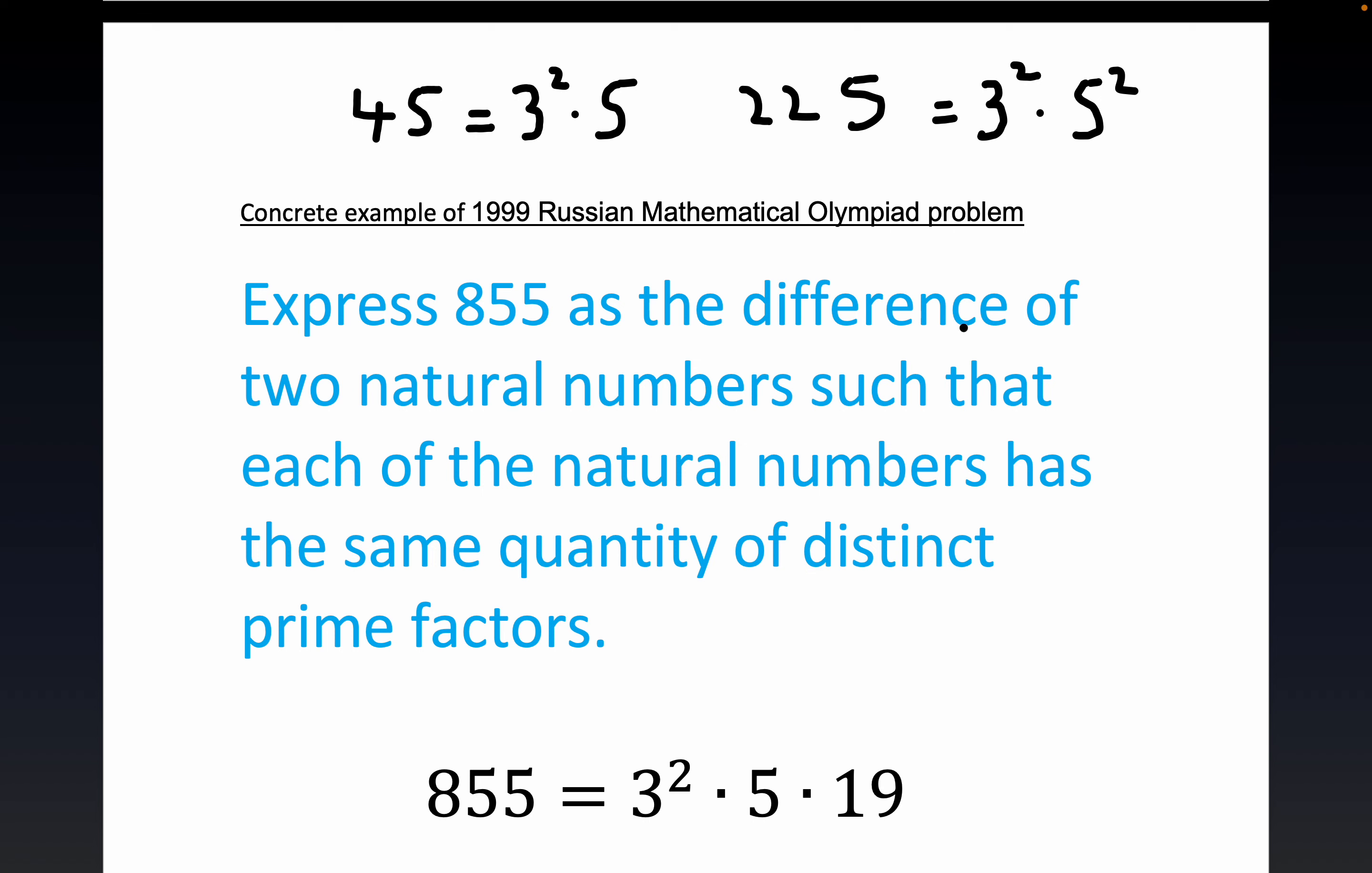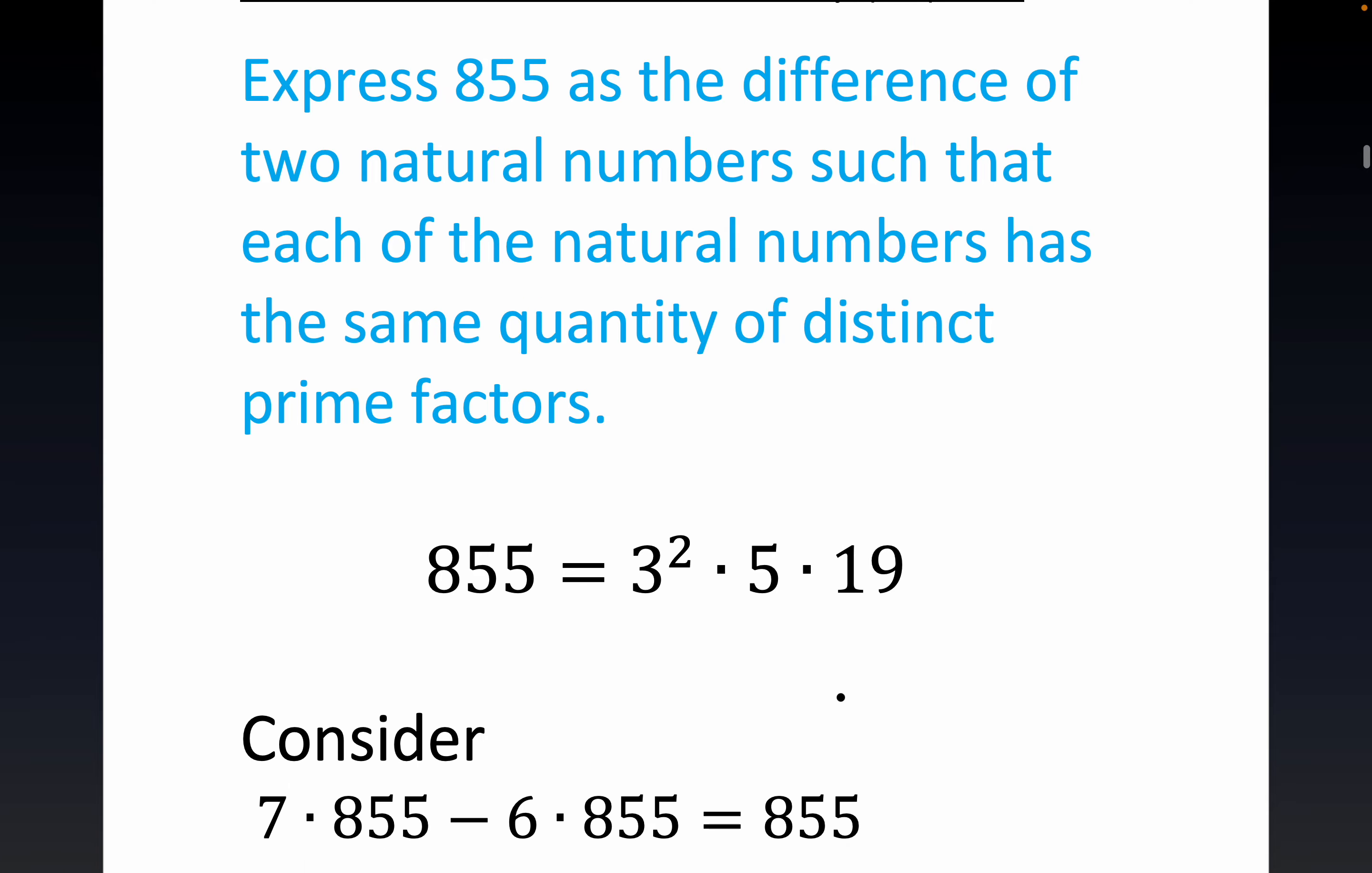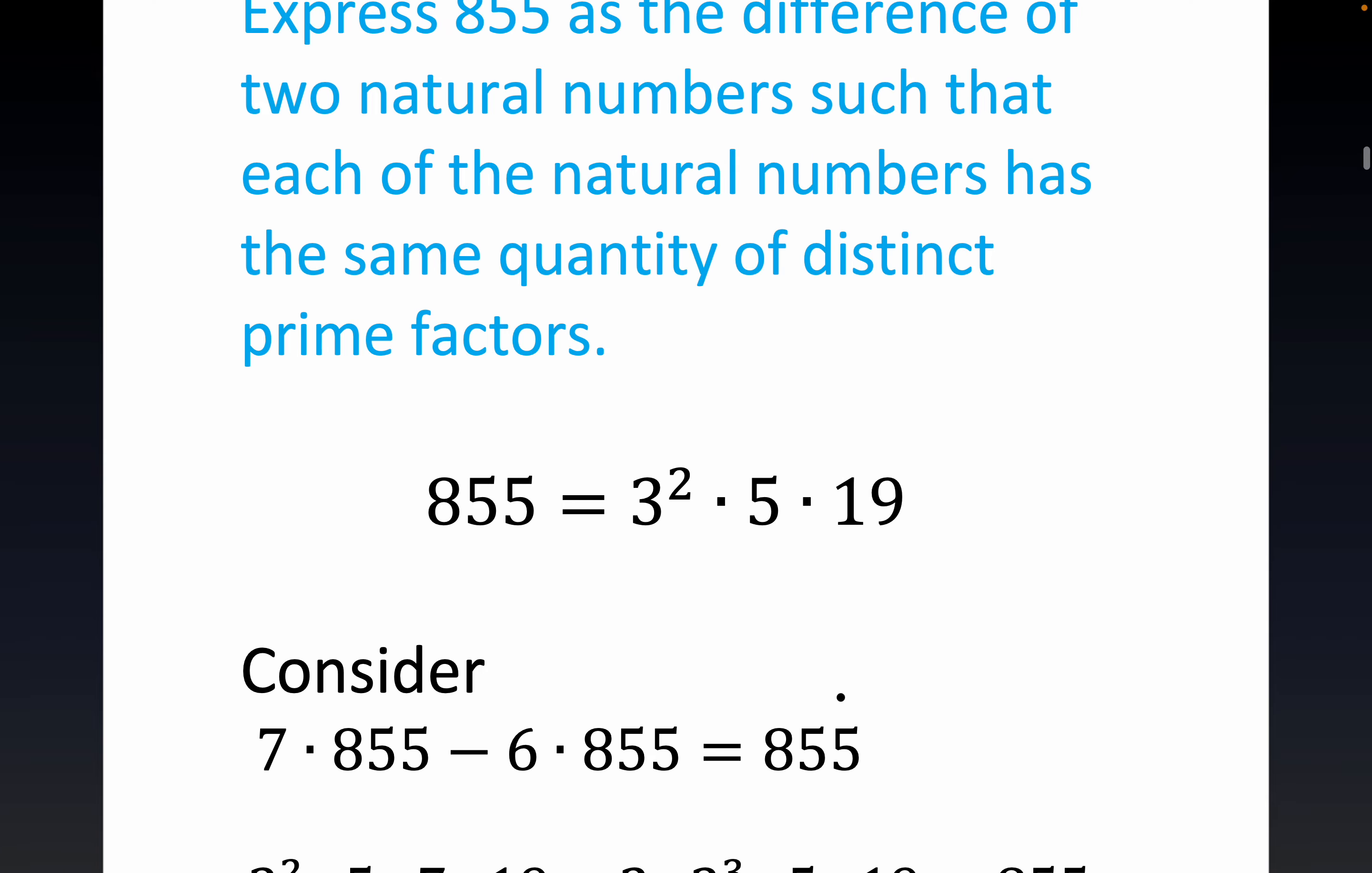We're supposed to express 855 as the difference of two natural numbers such that each has the same quantity of distinct prime factors. I just picked out 855 here. It's an odd number. Now notice what we do right here. It's kind of cool how this works out.